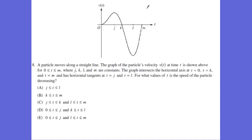Problem number 8 on this exam: we have a graph of velocity versus time, and we want to know where the speed is going to be decreasing. The speed goes from 0 velocity up to a maximum velocity, and then back down to 0, which means we are going to be decreasing in speed during the interval from j to k.